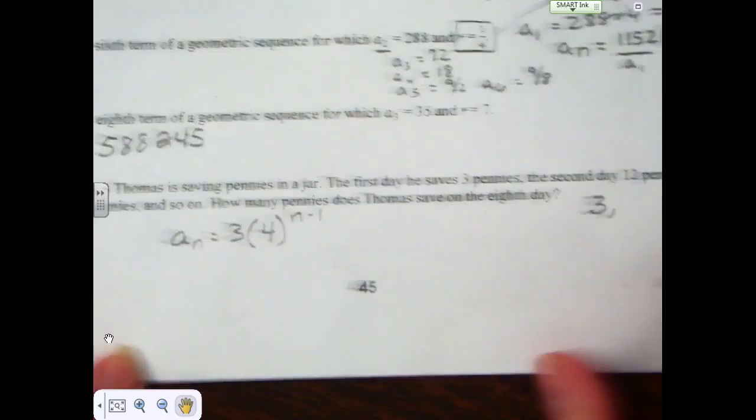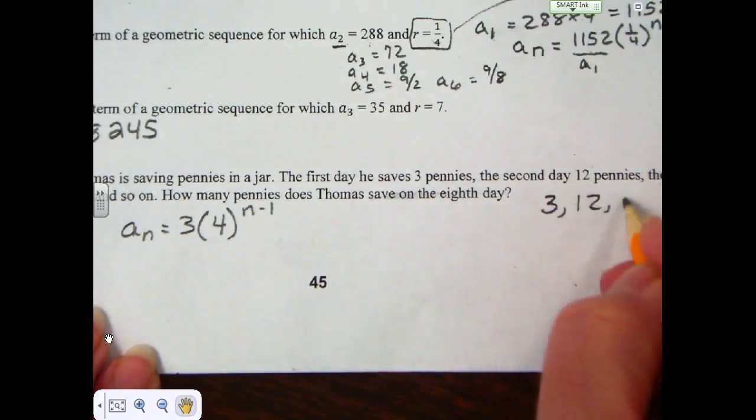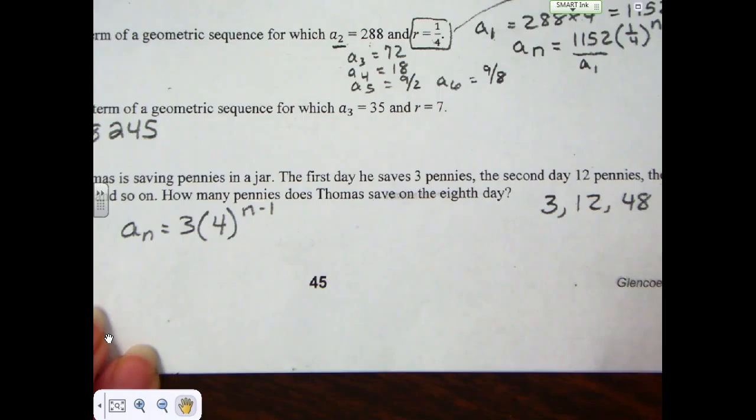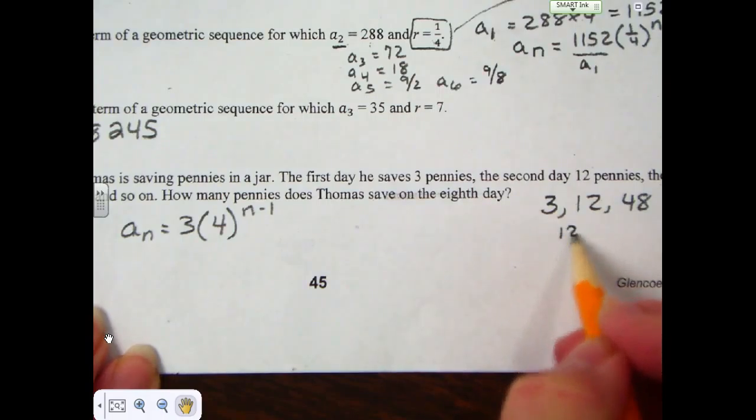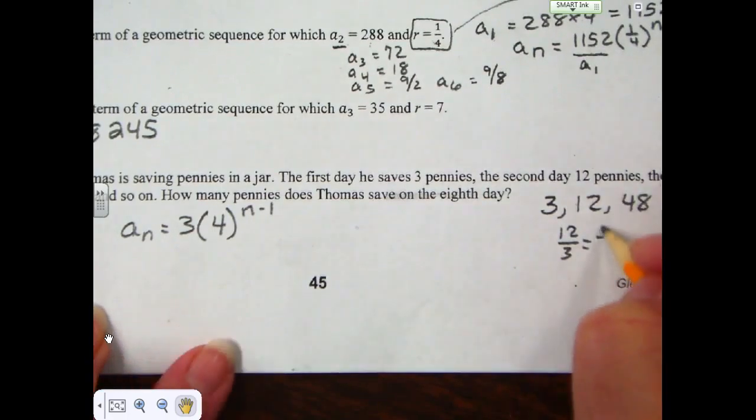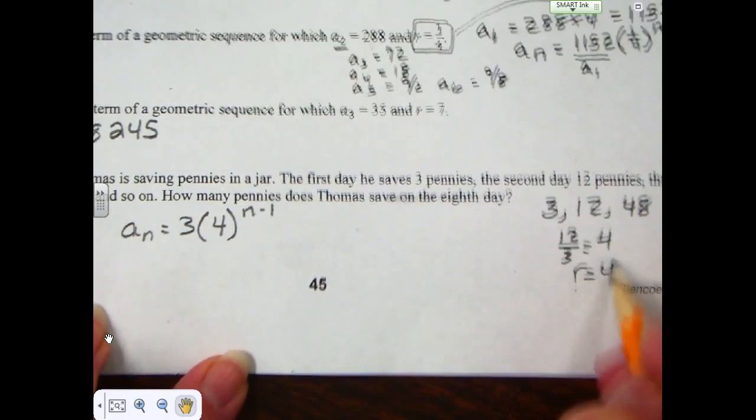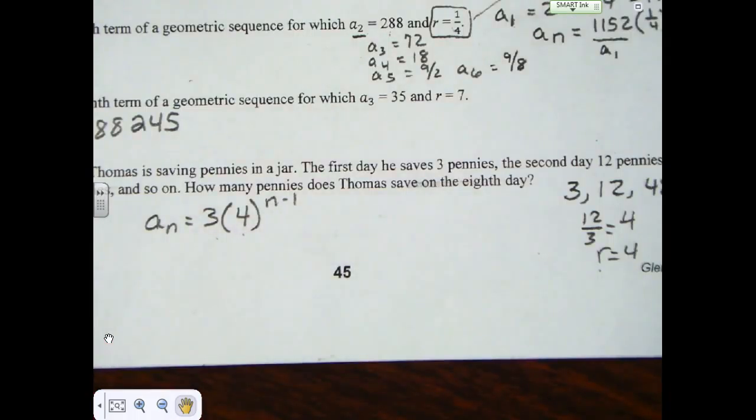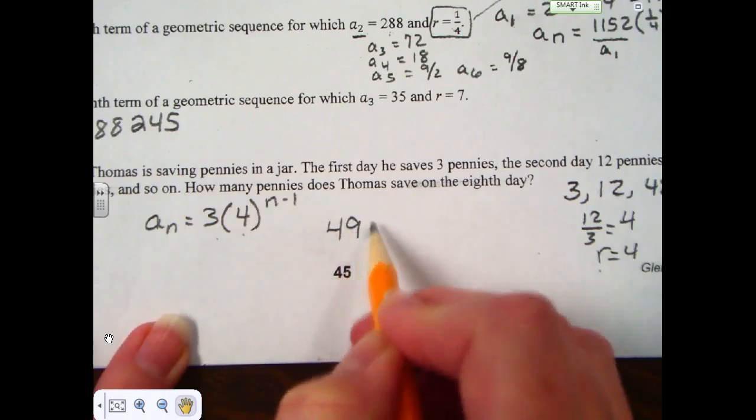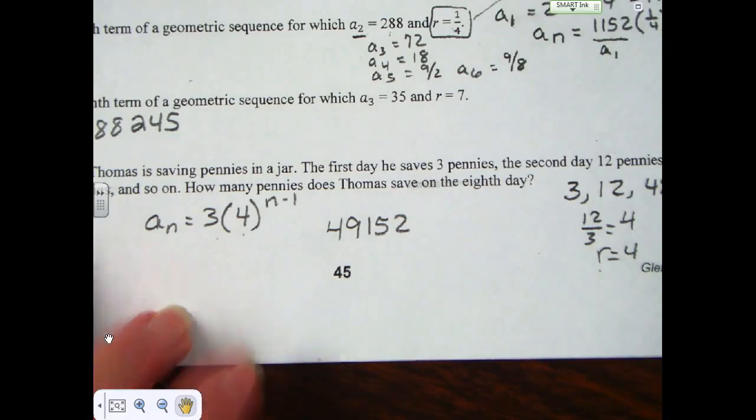3, 12, 48, that's right. So, from 3 to 4, the 12 divided by 3 is 4, so I know that the common ratio is 4. The first number was 3, so if I use that equation in my handy-dandy calculator, I find that on the 8th day, our dear Thomas, who is saving his pennies, saved 49,152 pennies, and that is a lot of pennies.